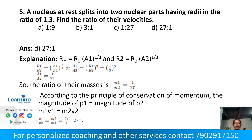Next question: a nucleus at rest splits into two nuclear parts having radii in the ratio 1 to 3. Find the ratio of their velocities. Using the nuclear radius formula, R equals R₀ times A to the power one-third: R1 by R2 equals A1 by A2 raised to one-third. Given R1:R2 = 1:3, we get A1:A2 = 1:27.